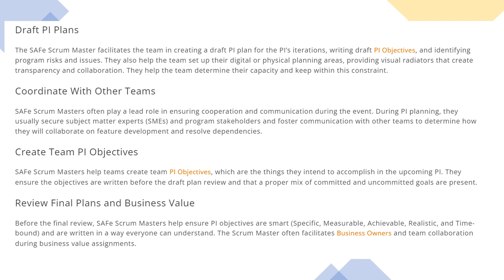The next action is to coordinate with other teams. The SAFe Scrum Master often plays a lead role in ensuring cooperation and communication during the event. During PI planning, they secure subject matter experts and program stakeholders, and foster communication with other teams to determine how they will collaborate on future development and resolve dependencies. Being an agile coach, I feel this is a very important role for a SAFe Scrum Master — coordinating with other iteration teams, identifying the SMEs and critical stakeholders, and ensuring their availability for clarifying things and resolving dependencies.